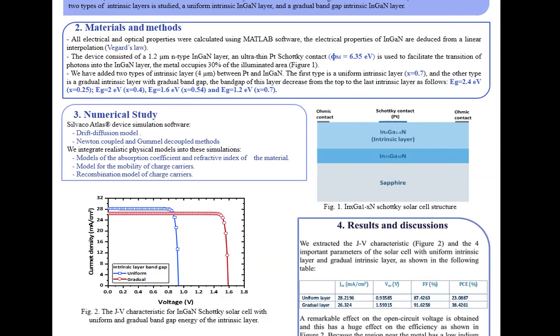We have added two types of intrinsic layer between platinum and indium gallium nitride. The first type is uniform intrinsic layer and the other type is gradual intrinsic layer with gradual bandgap.